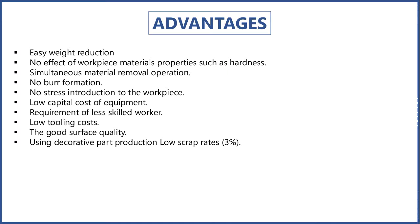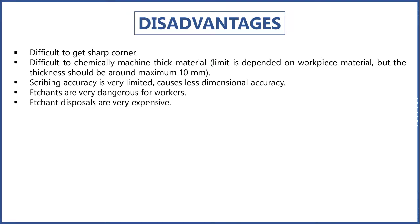Advantages of chemical machining include: easy weight reduction, no effect on workpiece material properties such as hardness, simultaneous material removal, no burr formation, no stress introduction during the process, low capital cost of equipment, requirement of less skilled workers, low tooling cost, good surface finish, decorative part production, and low scrap. Disadvantages include: difficult to achieve sharp corners, difficult to machine thick material, scribing accuracy is limited causing less dimensional accuracy, and etchants are dangerous for workers with expensive disposal.